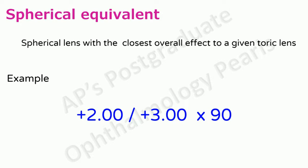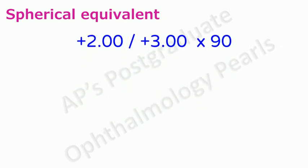For example, if you take this correction, the spherical equivalent will be that spherical lens power that is closest to or an average of this correction. So how do we calculate this?